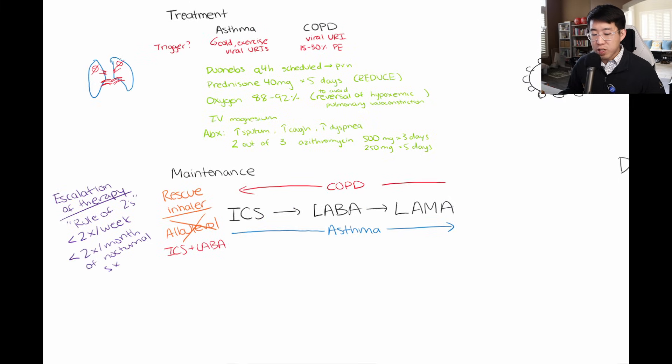And then finally, one last thing I wanted to mention for asthma is that there's a few adjunctive therapies. For example, if somebody has allergies, you may want to consider something like Montelukast or Singulair, and also if they have an elevated IgE, this would probably be done by the pulmonologist, but they may qualify for something called omalizumab.